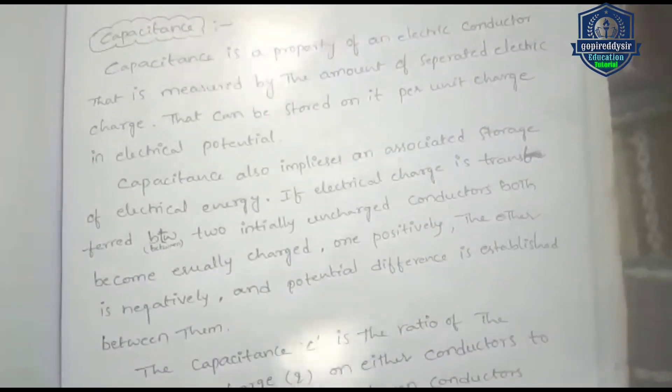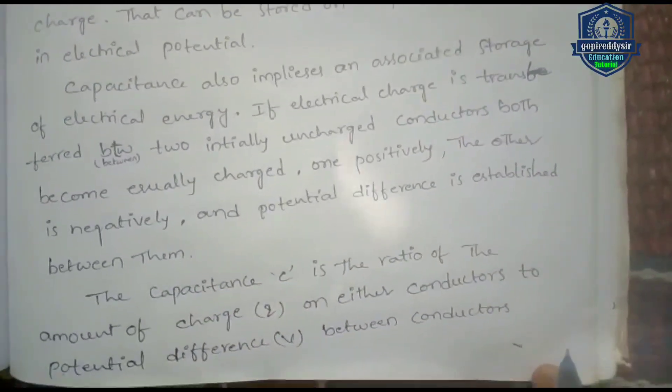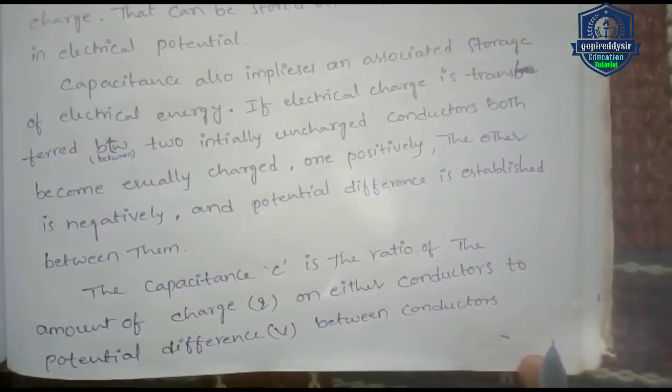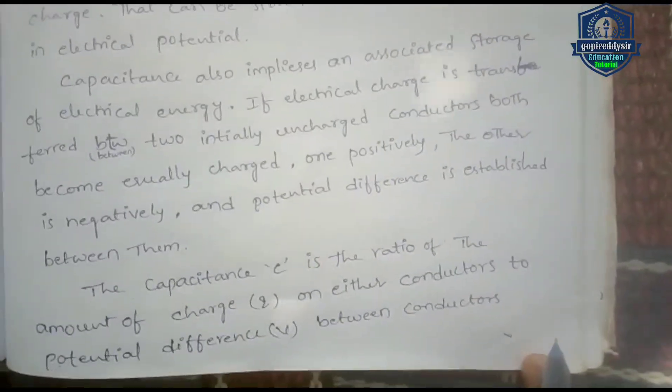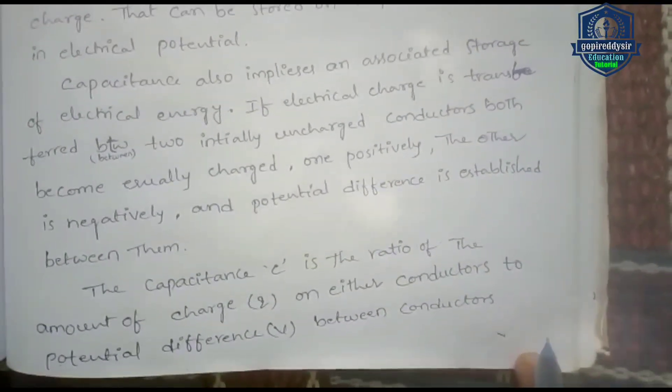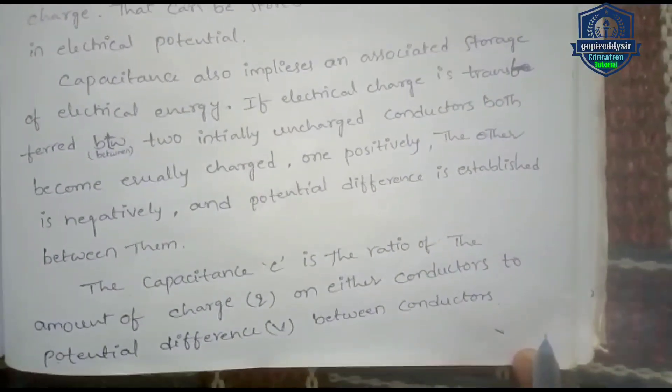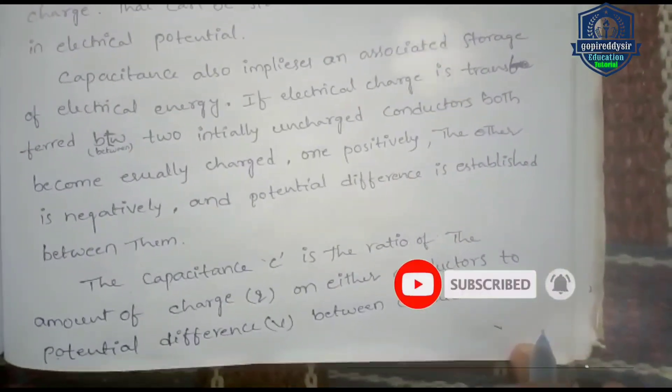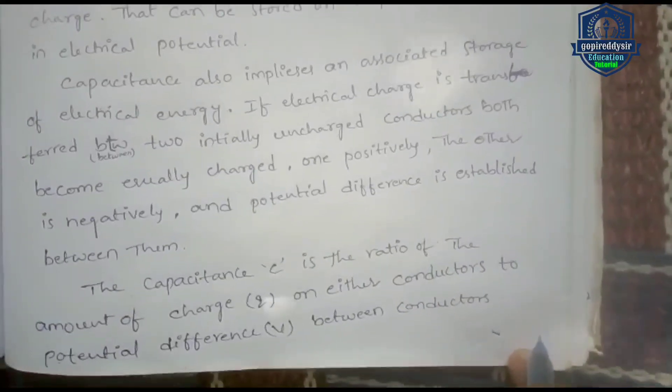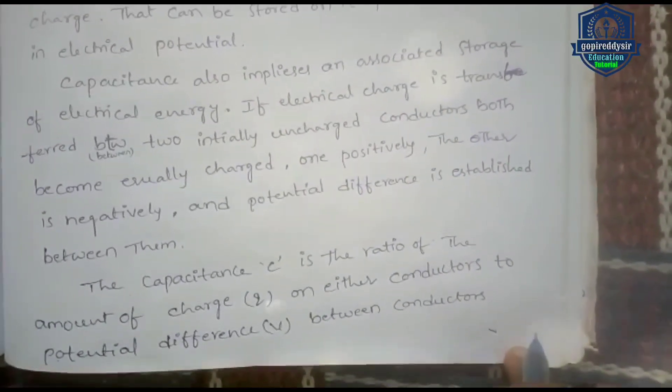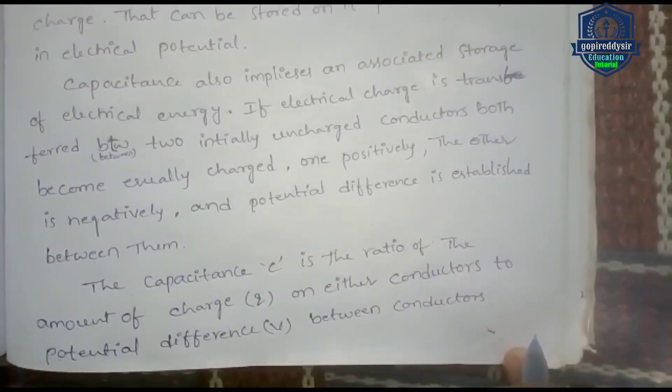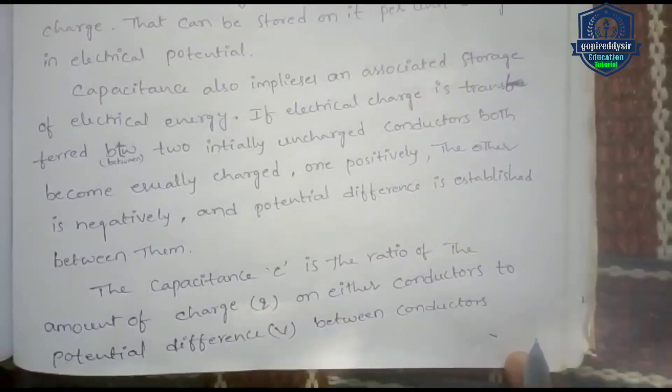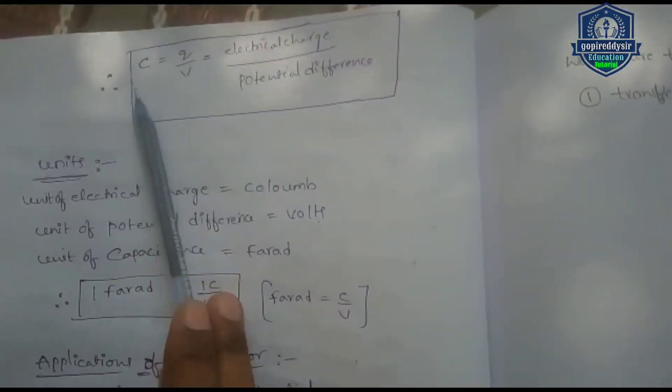The capacitance is the amount of charge on either conductor to the potential difference. The capacitance works as the amount of charge to potential difference that can be denoted.